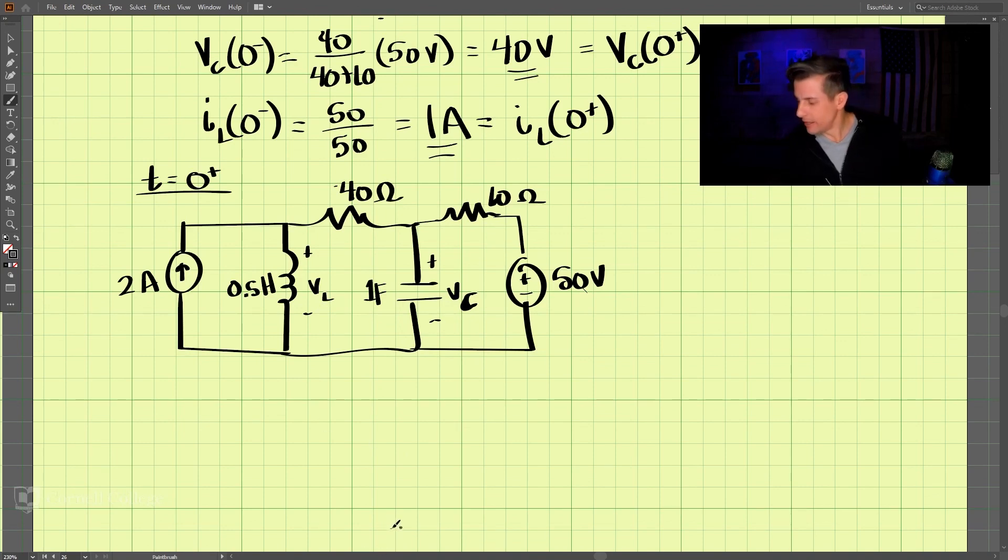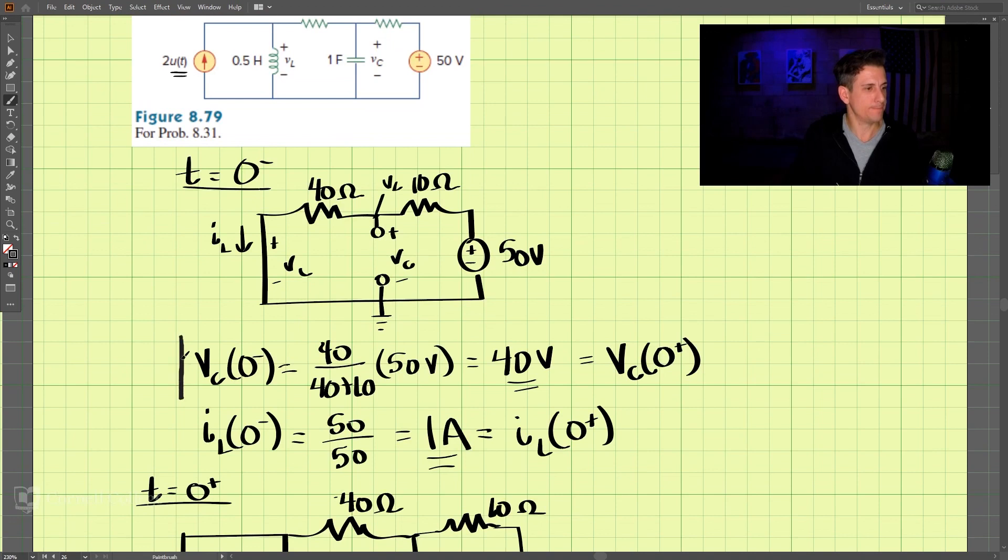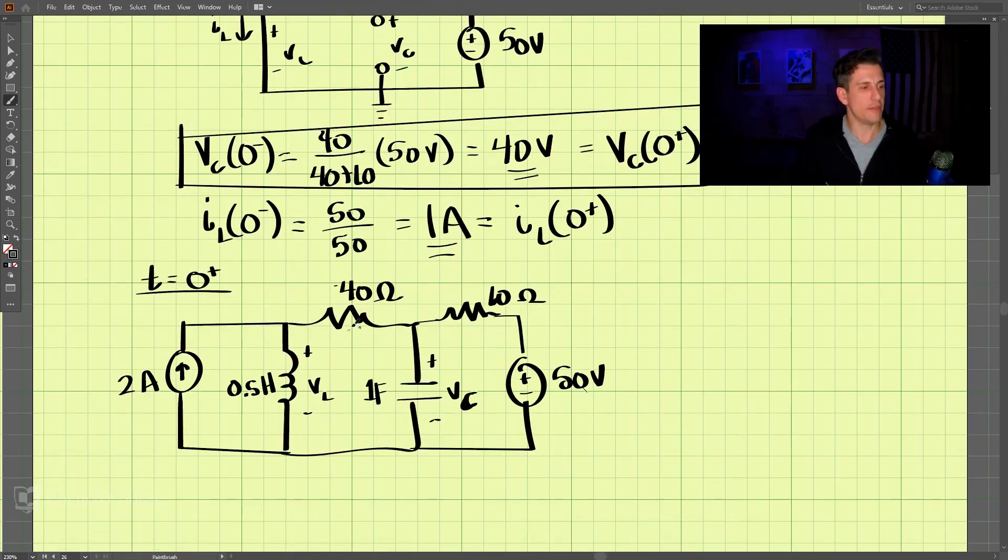So what we want to look at is what is the voltage of the capacitor at 0 plus? Well, we already have that answer. So we know that this here is 40 volts. This is equal to 40 volts here. Now, we know the current here, IL, is 1 amp.